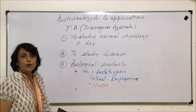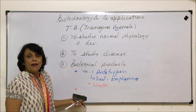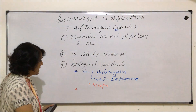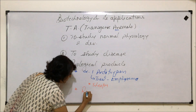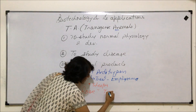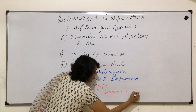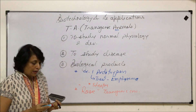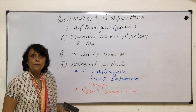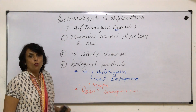Another important product obtained is from the first transgenic cow created by scientists. Its name is Rosie — this was the first transgenic cow.